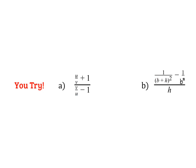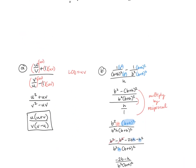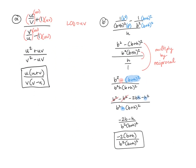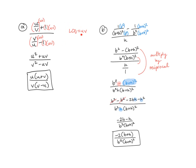Go ahead and pause the video and try these two examples — maybe Method 1 for example A and Method 2 for example B, just to practice. Then check your answers: for example A, multiply everything by the LCD UV, simplify, and factor to simplify at the end. For example B, combine the two fractions in the numerator, simplify, and multiply by the reciprocal. Several terms cancel, giving the final answer.